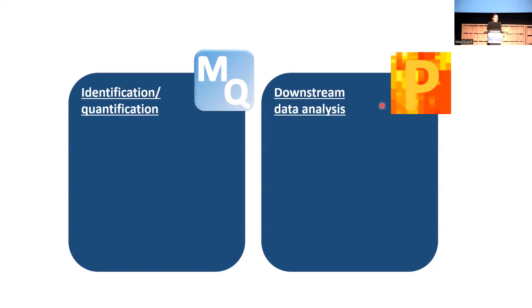The MaxQuant software deals with the identification and quantification of your peptides, proteins, and PTMs. To locate ourselves in the workflow: you have your sample, you put it in your mass spectrometer, the mass spectrometer does its job, and at the end it gives you files - the mass spectra we were talking about. The input to MaxQuant is these files from the mass spectrometer. MaxQuant then gives you a list of TXT files as output.